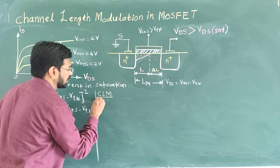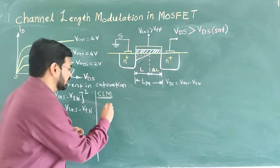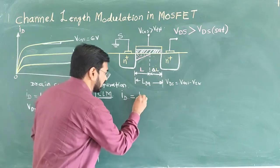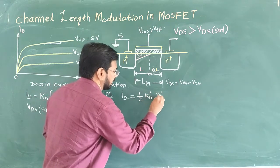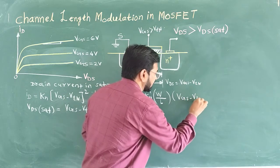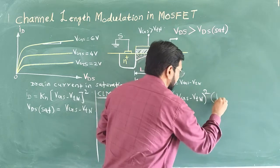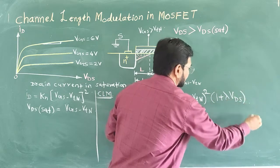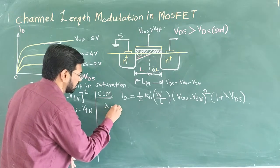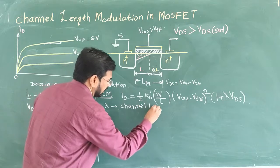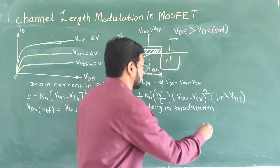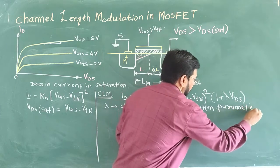Now we can write the drain current equation for this condition, which will show the dependence of ID on VDS. This is the channel length modulation condition of MOSFET — in short, CLM. ID in the case of channel length modulation is equal to one-half KN-prime times W divided by L, times (VGS minus VTN) squared, with an additional factor of (1 plus lambda VDS).